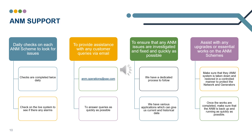Should we find an issue during our daily checks, or be informed by a customer or sometimes the control room, we have a process to follow. This will include checking on our live system to see if there's anything obvious. We also have other teams who we can involve, and various applications which can give us current and historical data. This helps with the investigation.